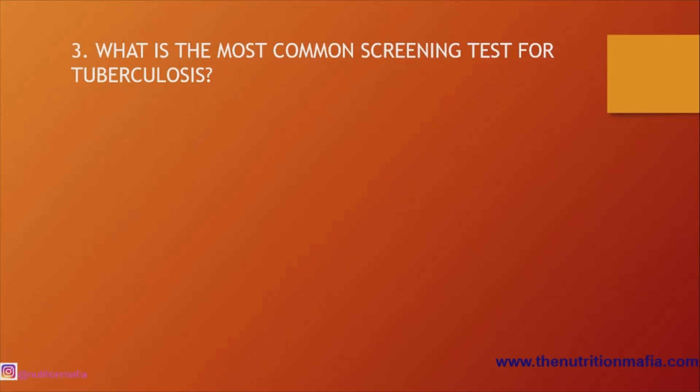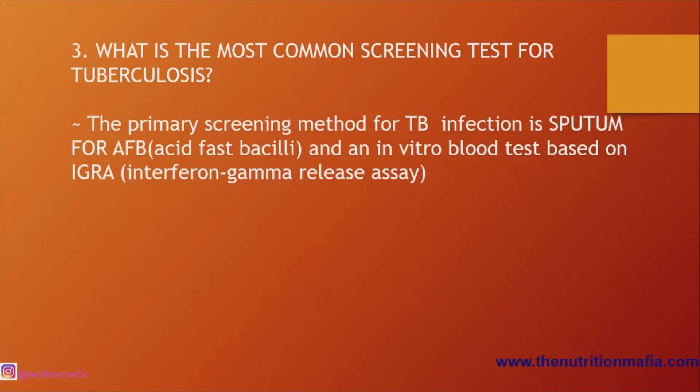What is the most common screening test for tuberculosis? The primary screening method for tuberculosis infection is sputum for AFB — that is, acid-fast bacilli — followed by an in vitro blood test based on IGRA.